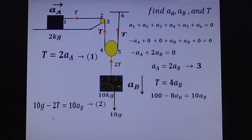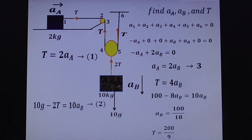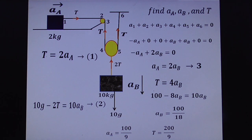Using g = 10, equation two gives: 100 − 2T = 10·A_B. Substituting T = 4A_B: 100 − 8A_B = 10A_B, so 100 = 18A_B, giving A_B = 100/18. Then A_A = 2A_B = 100/9, and T = 4A_B = 400/18 = 200/9. This is a very useful concept for JEE Mains, Advanced, and NEET.